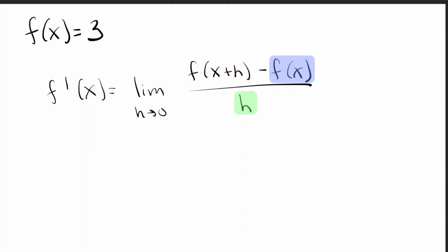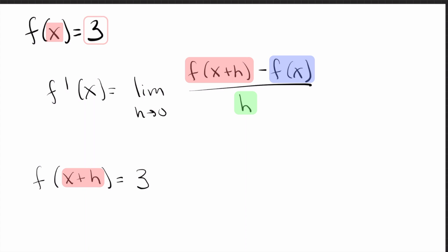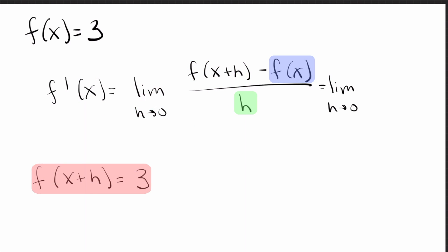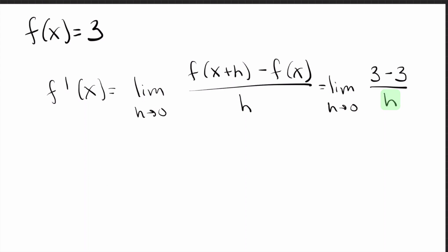The first thing is f of x plus h. That means take the equation f and replace any x's you see with x plus h. Well, on the right there are no x's — it's just a three — so there's nothing to replace; it just stays three. So f of x plus h is three, f of x is three, and h on the bottom is just h. That just becomes zero on the top, we get zero over h, and zero divided by any number is zero.